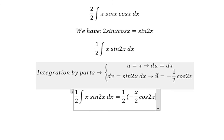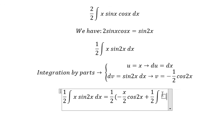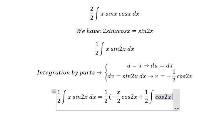Next, we have the integral of v du. Because we have the negative here, this becomes positive 1 over 2 times the integral of cos 2x dx.